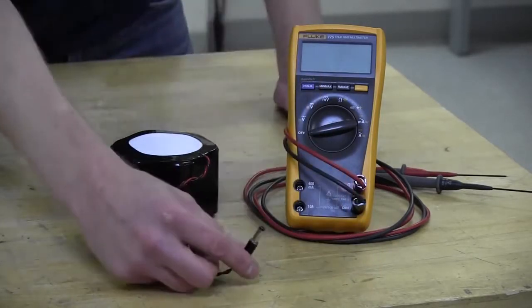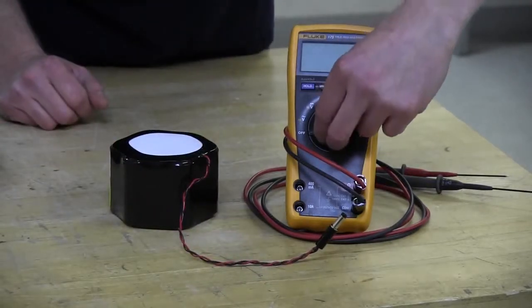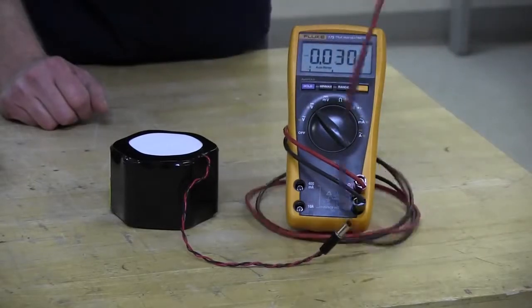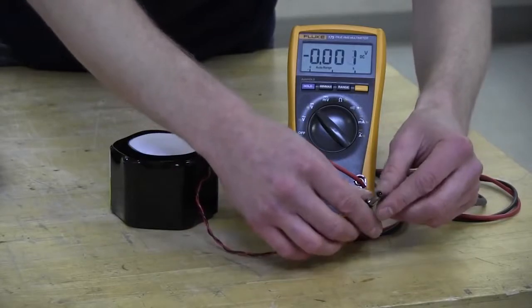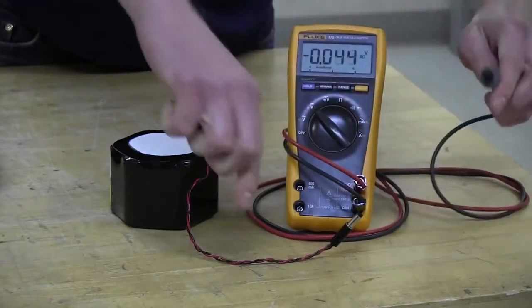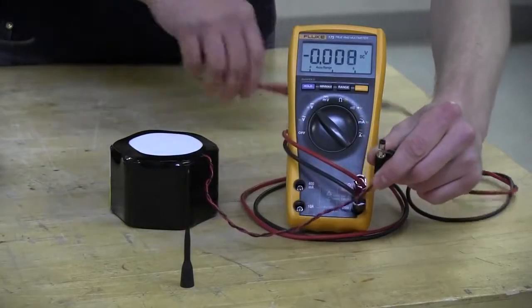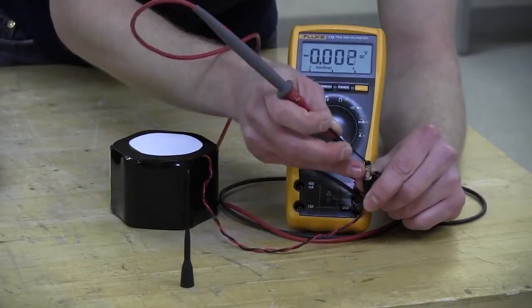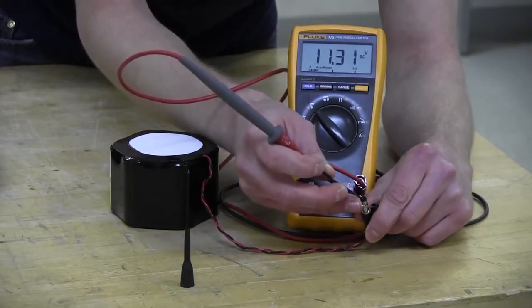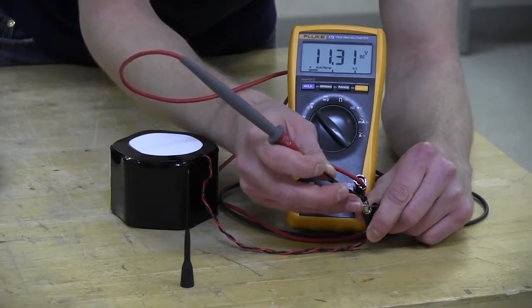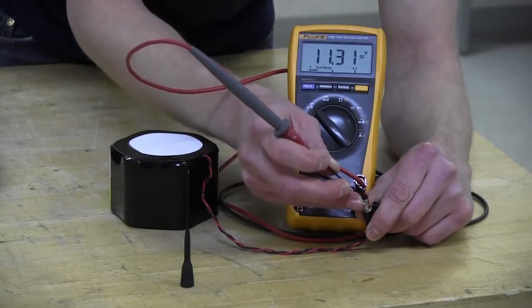While we have this out, we'll check the voltage using our digital multimeter. Turn that to volts DC. Using your common lead, that's going to go on the exterior of the barrel connector, and your red lead is going to go into the center. I measured this at 11.31 volts, and that looks pretty good for a fresh battery. So we're going to go ahead and install this.